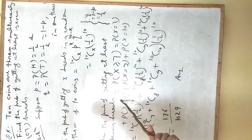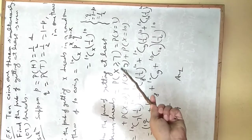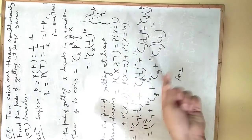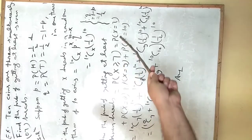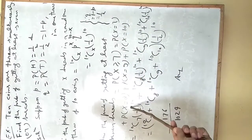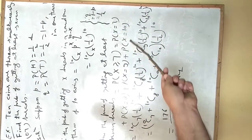Now the probability of getting at least 7 heads. Since we need 7 heads, the value of x will be either 7 or 8 or 9 or 10. It will be probability x greater than or equal to 7. It means P(x=7) plus P(x=8) plus P(x=9) plus P(x=10).